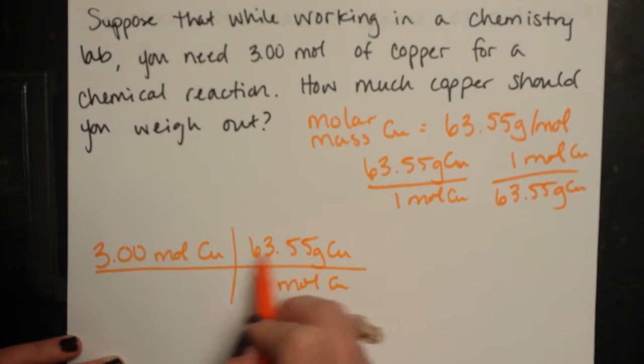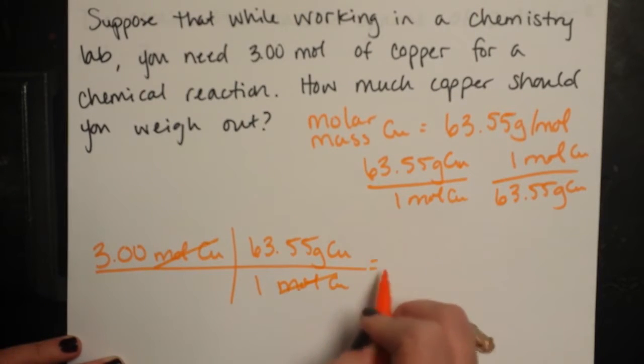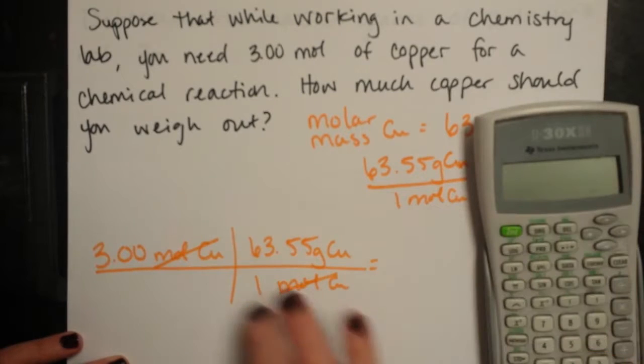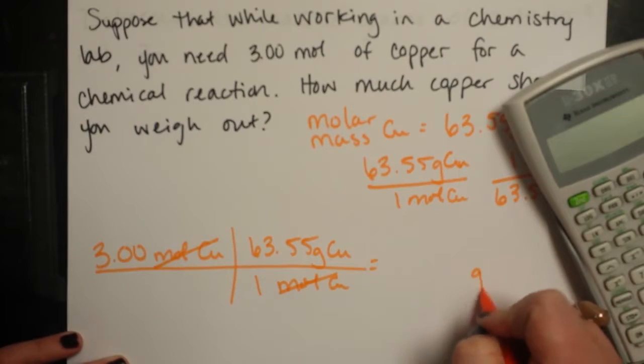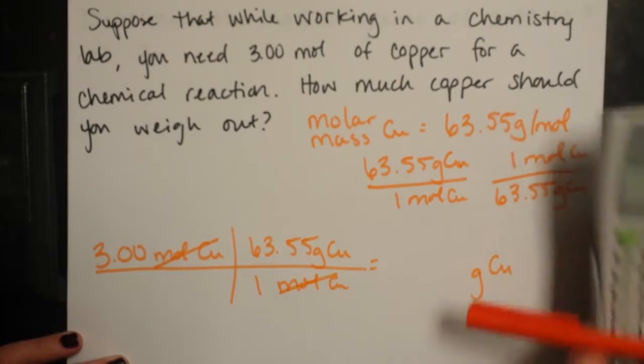That means that if one mole weighs that much, if I have three moles, it should be three times the mass. Okay, so again, it makes sense to multiply. My moles of copper cancel. My units at the end will be grams of copper, which is what you're looking for.